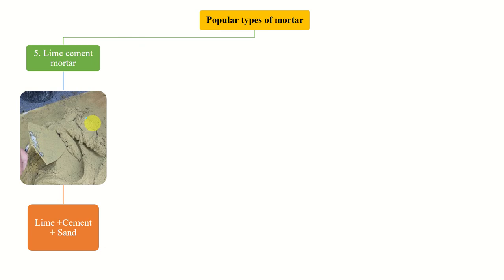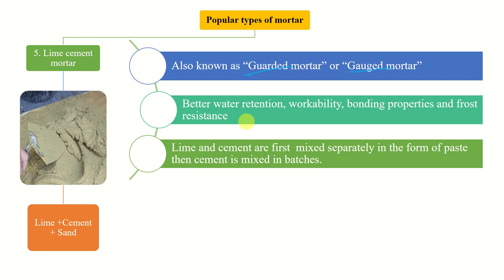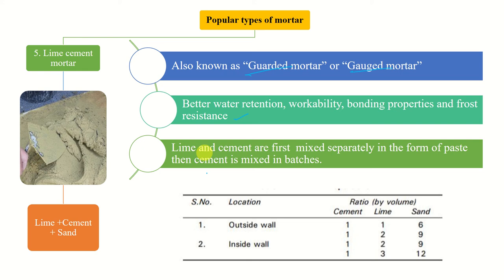Lime cement mortar, also known as gauged mortar or gauged motor, is very good for water retention, workability, bonding properties, and frost resistance. Lime and cement are first mixed separately in paste form, then cement is mixed in batches. The proportions are 1:1:6 (cement:lime:sand) for outside walls. Other acceptable proportions are 1:2:9 and 1:3:12 — the last two are for inside walls.